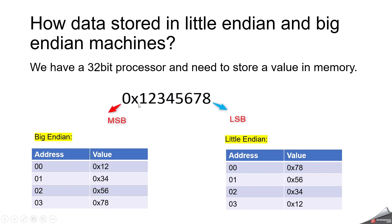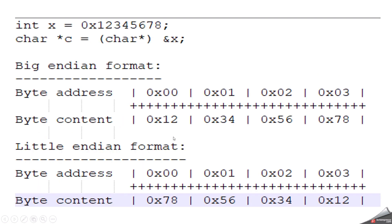A useful way to remember the big-endian case: it stores data the same way we normally write it. For example, we generally write 12345678 from left to right, and that is exactly how the data gets stored in a big-endian machine — MSB first at the lowest address.